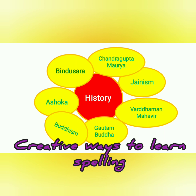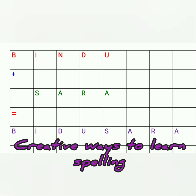Here are words related to history for Class 6: Bindusara, Ashoka, Buddhism, Gautam Buddha, Vardhamana Mahavira, Jainism, Chandragupta Maurya. These are words related to history, and here we have one more method.